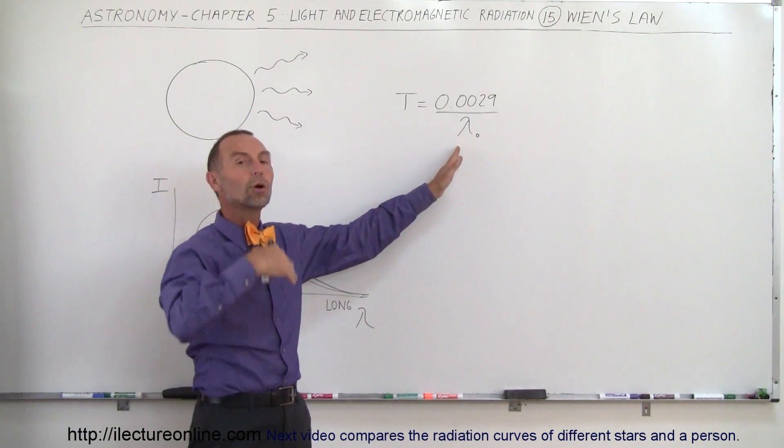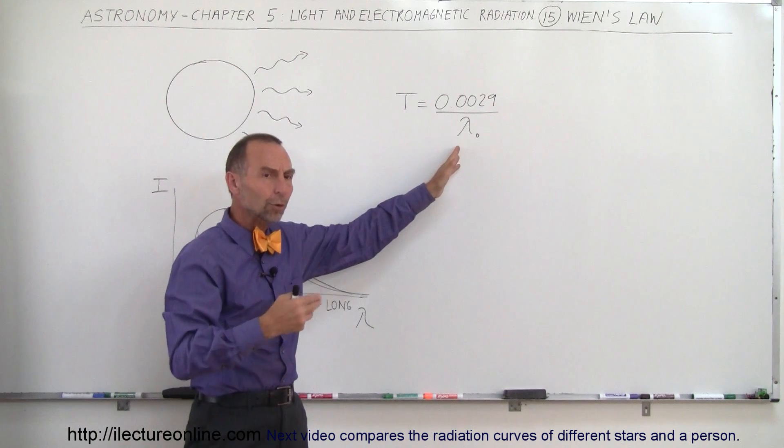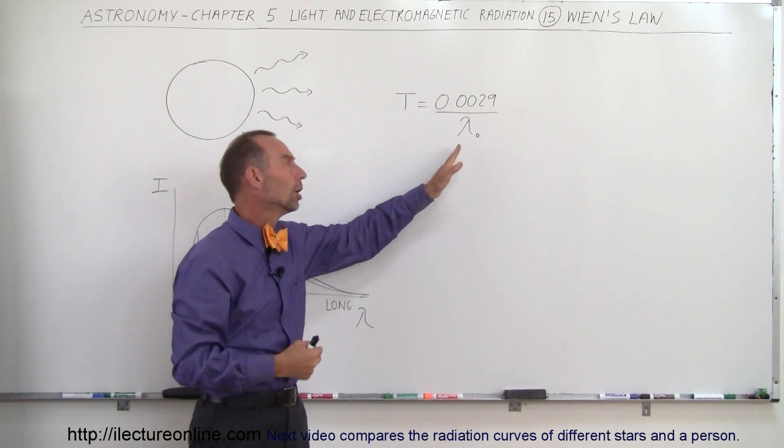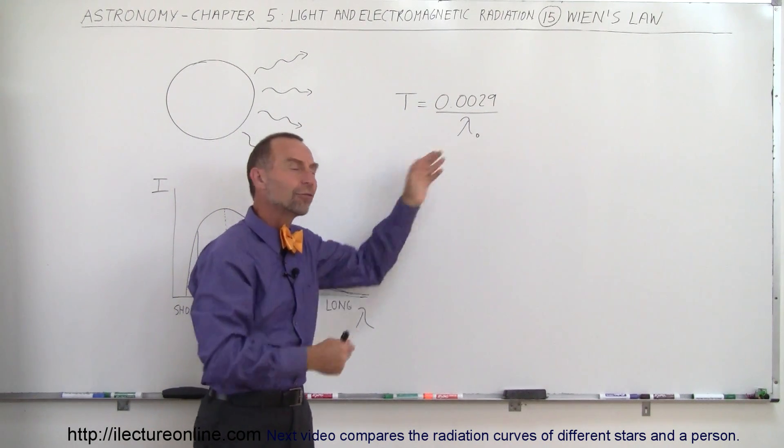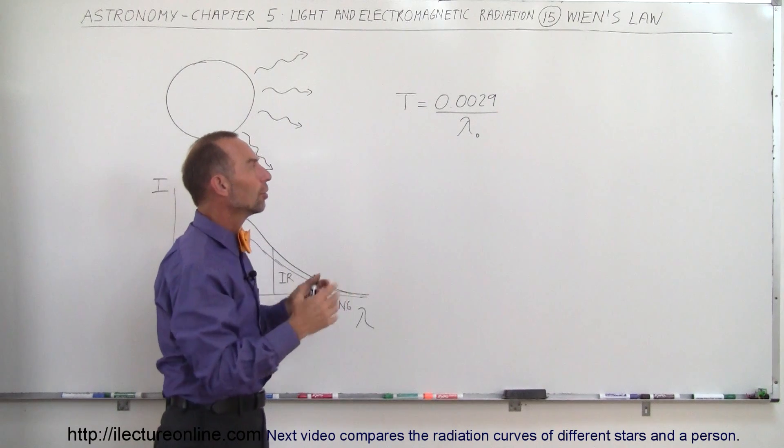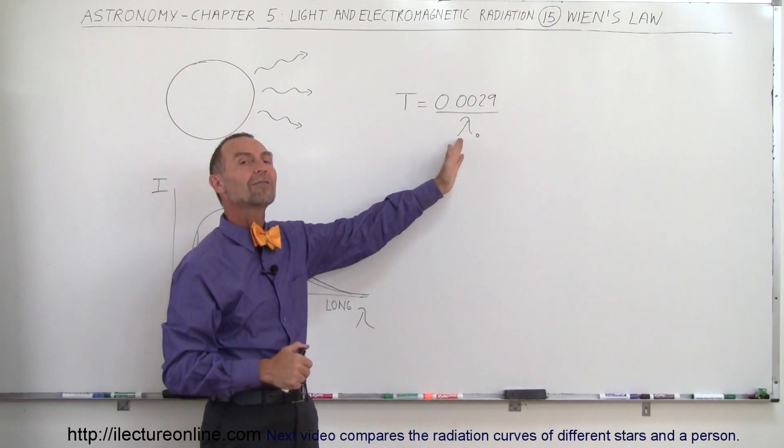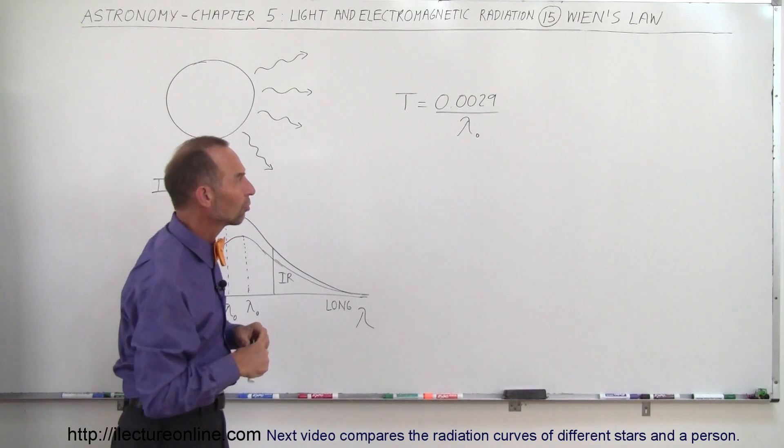In other words, the wavelength at which more atoms vibrate or more electromagnetic radiation is emanated from the object than any other type of wavelength. So that would be what we call the peak wavelength of the radiation curve. And we'll look at that in just a moment.